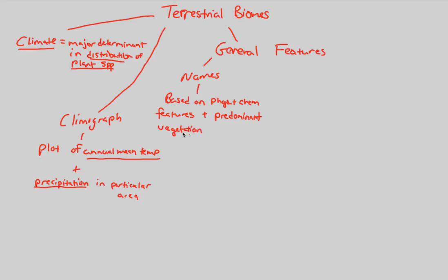Why is vegetation so critical? Because vegetation is essentially those autotrophs starting the entire trophic level and trophic chains. All of those interactions between and among species start at the most basic vegetation — the most basic plant species. Thus, if you are terrestrial and you are a biome, it'll all be based off of vegetation and also the physical and chemical features we can observe.